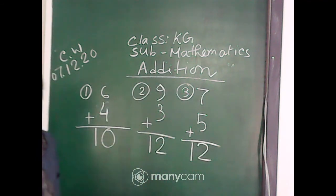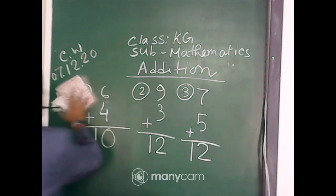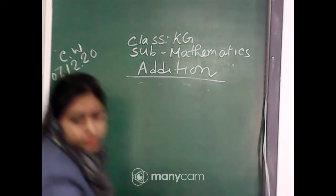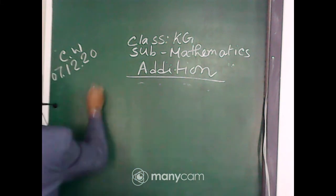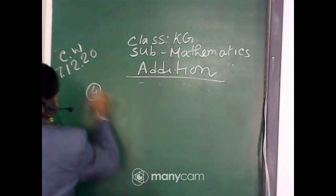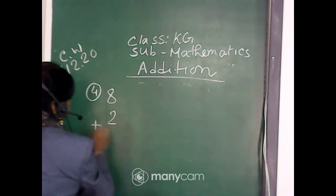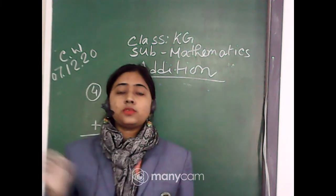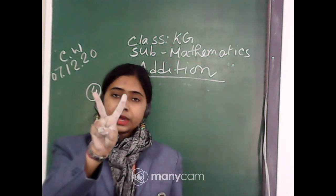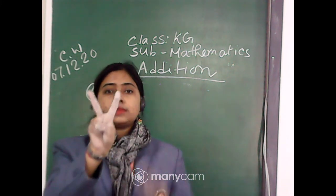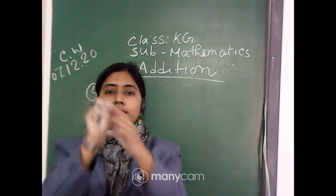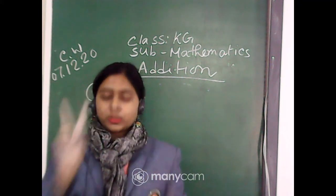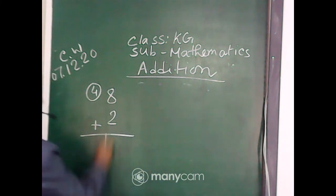Number 4: 8 plus 2. It is very easy. The small number is 2. So, 1, 2. And 8 after 2 fingers: 9, 10. Very easy — 8, then 9, 10. So, 8 plus 2 is equal to 10.